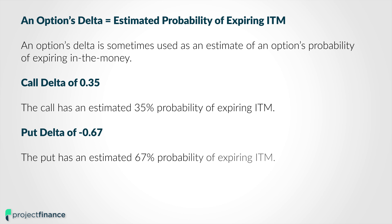Now let's have a thought experiment and explore why this might be intuitively. For me, the easiest way to understand it is that an option's delta is sometimes referred to as the estimated probability of the option expiring in the money. For example, if we have a call option with a delta of 0.35, that means the call option has an estimated 35% probability of expiring in the money. If we look at a put option with a delta of negative 0.67, then that put option has an estimated probability of 67% of expiring in the money. Based on that, we can start to understand delta as a probability-weighted number of shares at expiration.